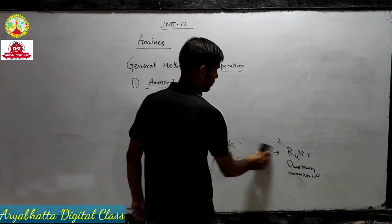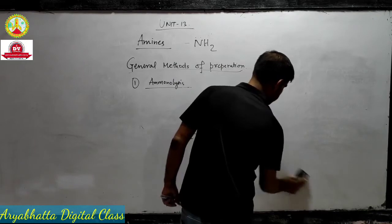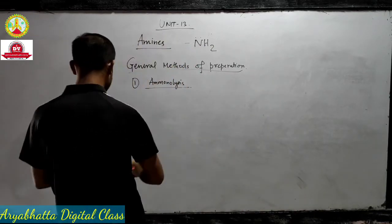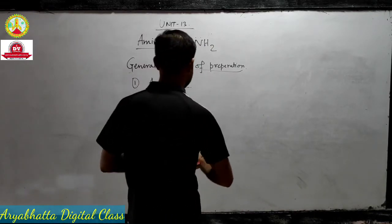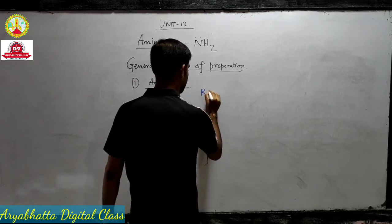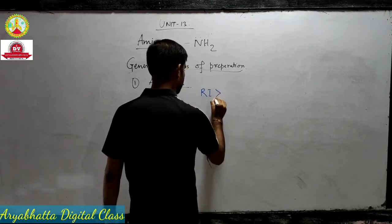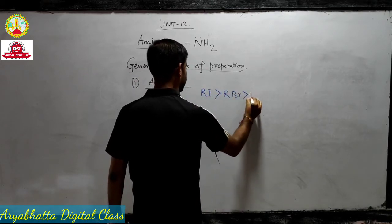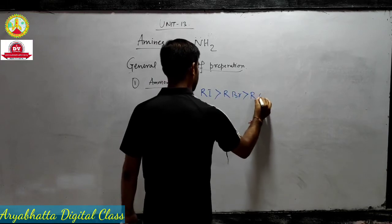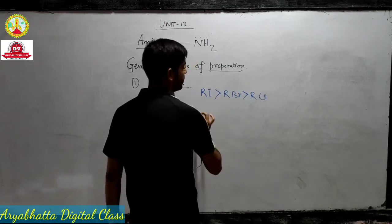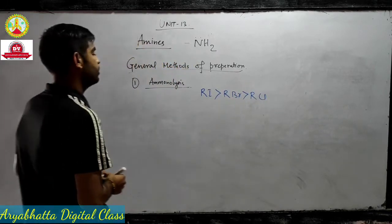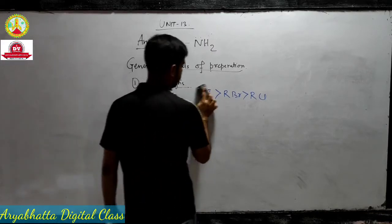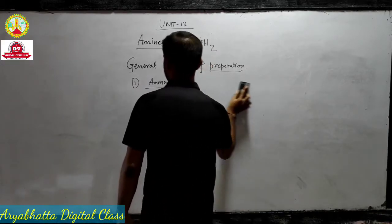For this reaction, the order of reactivity for alkyl halides is: alkyl iodide reacts faster than alkyl bromide, which reacts faster than alkyl chloride.